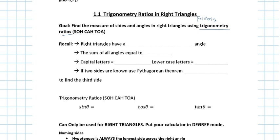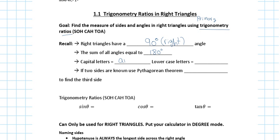Right triangles have a right angle. The sum of all interior angles of a triangle equals 180 degrees, no matter what kind of triangle it is. Capital letters go for the angles, and lowercase letters go for the sides.